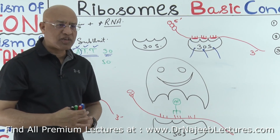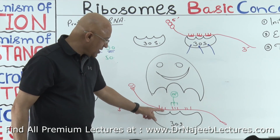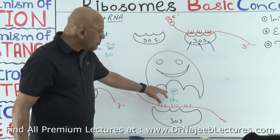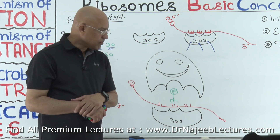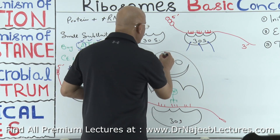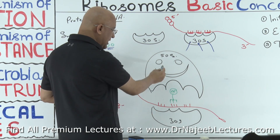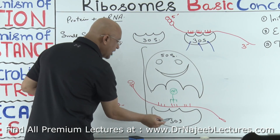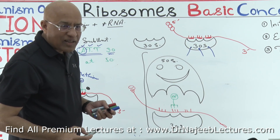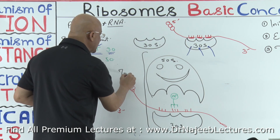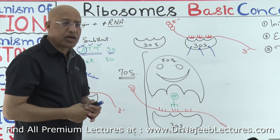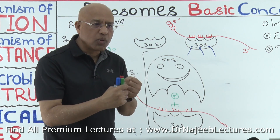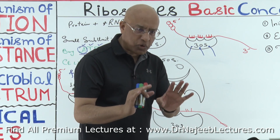Like a manager arriving to find everything ready — the junior staff, the script, the signal — so the 50S is happy that formyl methionine is present with initiation factors. Now 30S plus 50S together, along with mRNA and other components, form what we call the 70S ribosomal unit — the functional ribosome — which will now start the elongation process, adding amino acids.